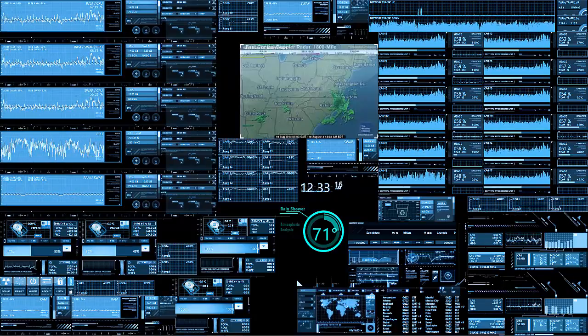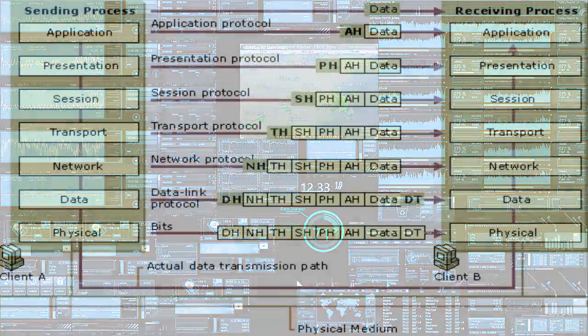Let's jump in and talk about layers. What we're going to talk about first is called the OSI model. Basically, these are seven layers that ports could be classified under. The top layer is application — that's layer 7. The next is presentation, session, transport, network, data, and physical. So again, the top being layer 7 and the bottom being layer 1.